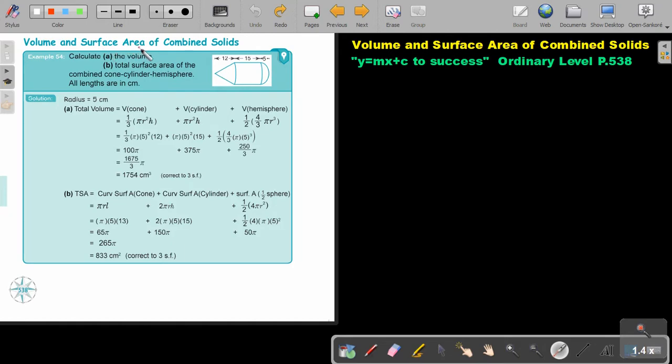Volume and surface area of combined solids. Calculate the volume and the total surface area of the combined cone-cylinder-hemisphere. All lengths are in centimeters. Now, just take note. There's the cone, there's the cylinder, and there is the hemisphere.